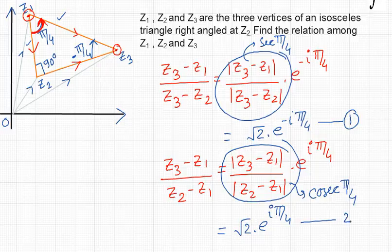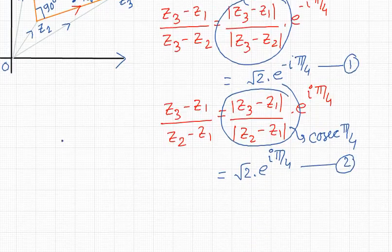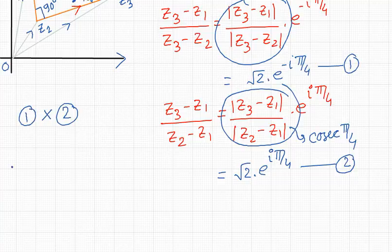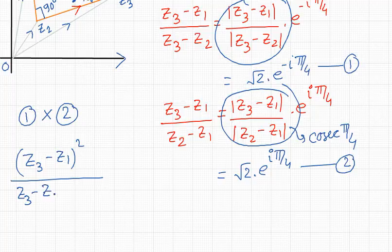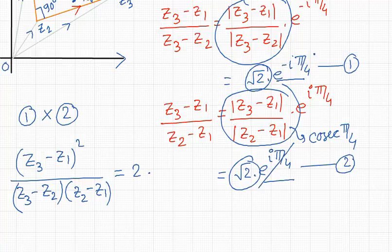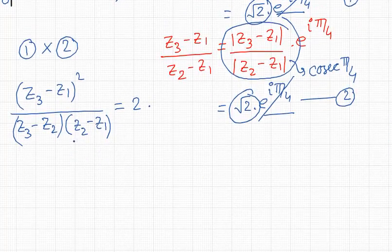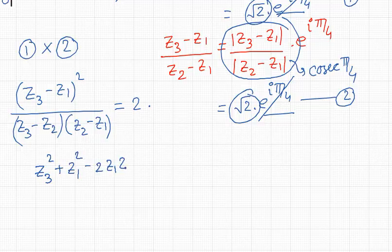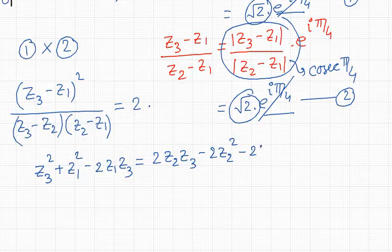Multiplying Equation 1 and Equation 2, we get (Z3 − Z1)² / [(Z3 − Z2)(Z2 − Z1)] = √2 · √2 · e^(−iπ/4) · e^(iπ/4). The exponential terms cancel and √2 · √2 = 2. Expanding the left side: Z3² + Z1² − 2Z1Z3, and the right side gives: 2Z2Z3 − 2Z2² − 2Z1Z3 + 2Z1Z2.